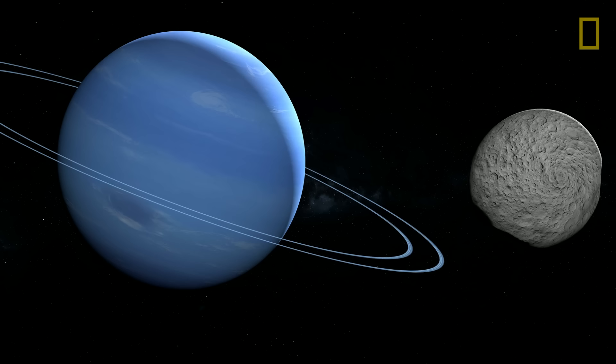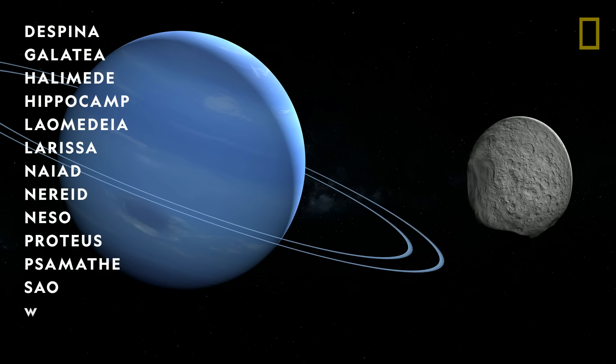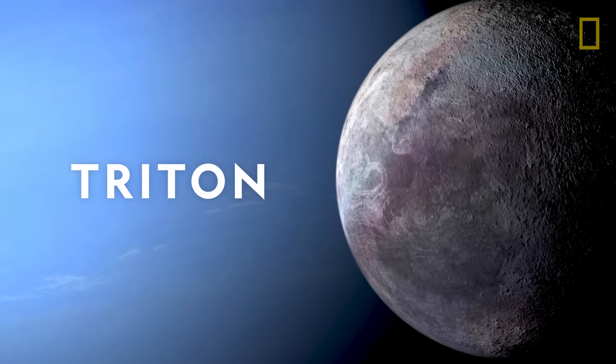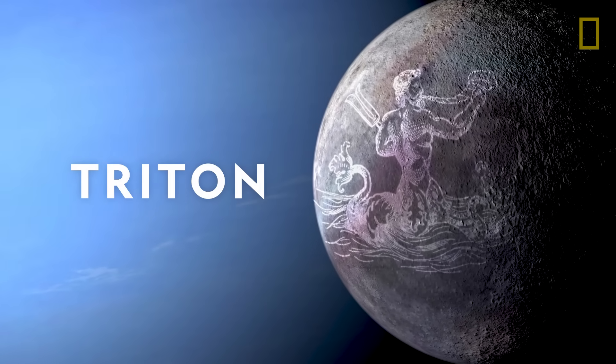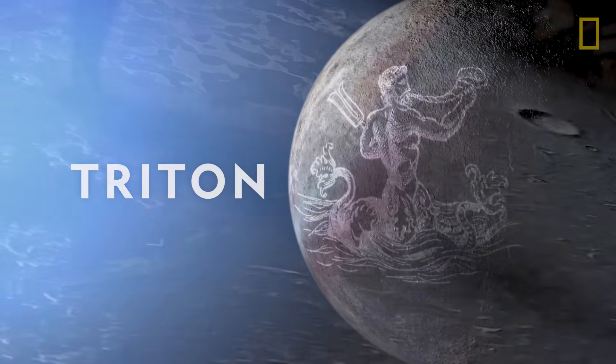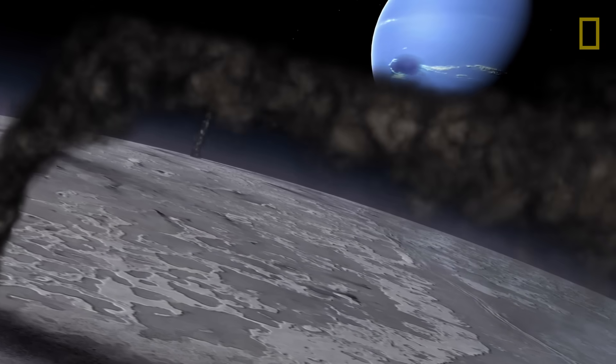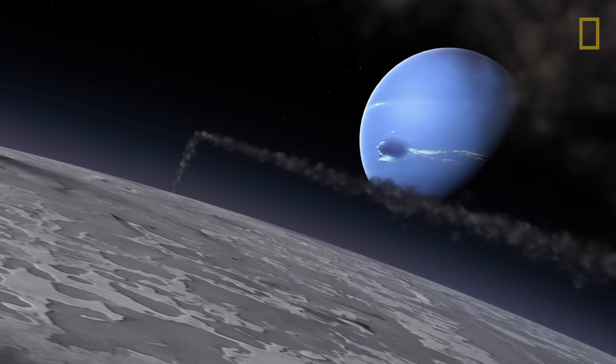Also revolving around the planet are 14 known moons, with the largest called Triton. Named after the son of the ancient Greek sea god, Triton has ice volcanoes and may even contain a subsurface ocean.